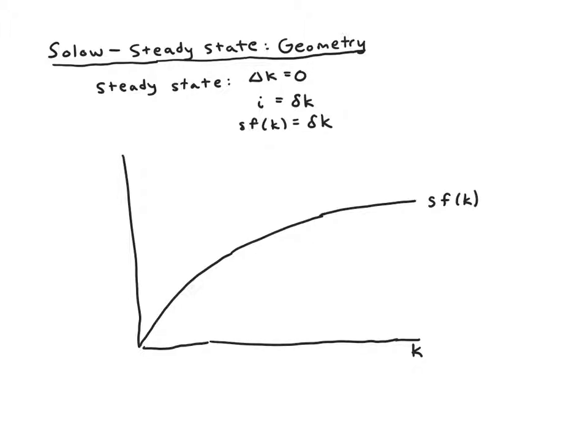We've graphed the left-hand side. Now we'd like to graph the right-hand side and see where the two intersect. What does δ·k look like? This is like a straight line, mx + b, where k is the x variable and the intercept b is 0. So it's a straight line starting at the origin. This is our depreciation, δk.